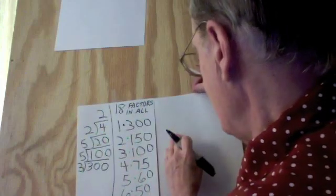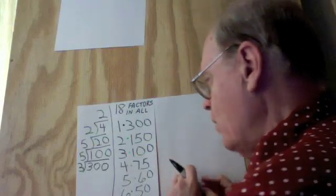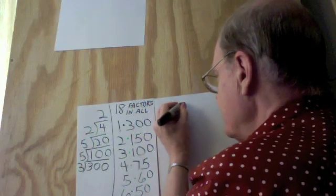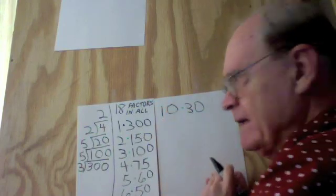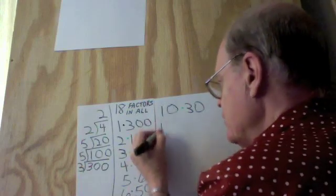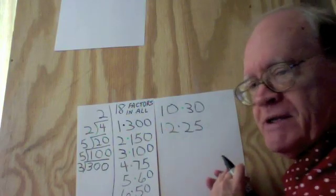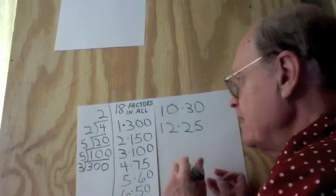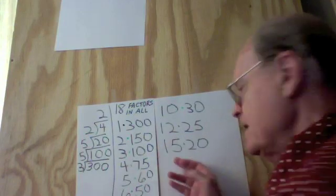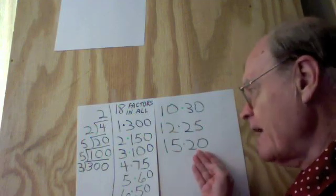7 does not go into 300, nor does 8, nor 9, but 10 does. 10 times 30. 11 doesn't, but 12 does. 12 times 25. 13 doesn't. 14 doesn't. But 15 does. 15 times 20. 16 doesn't, nor 17, nor 18, nor 19, but 20 does, and I already have 20.